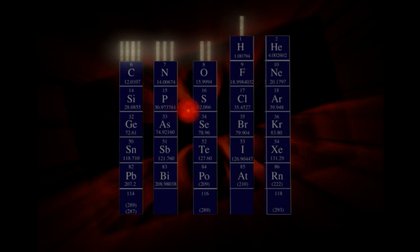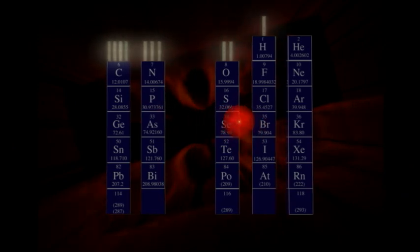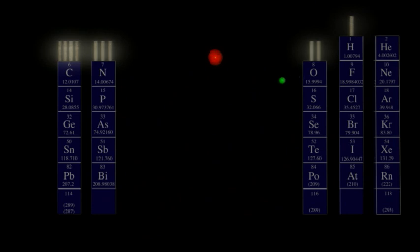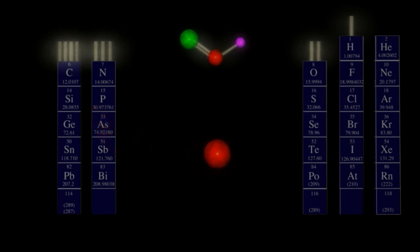Now this carbon atom wants to make four bonds, and it is pretty versatile about how it does this. Let's give it a double bond with oxygen, satisfying oxygen's desire for two bonds. And let's give it one hydrogen. That's a total of three bonds for carbon. It still wants another. So let's give it another carbon for its fourth bond.